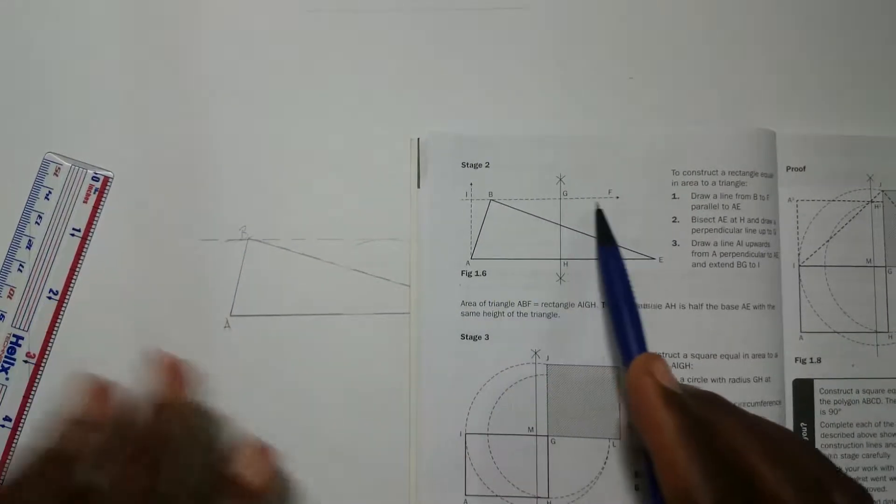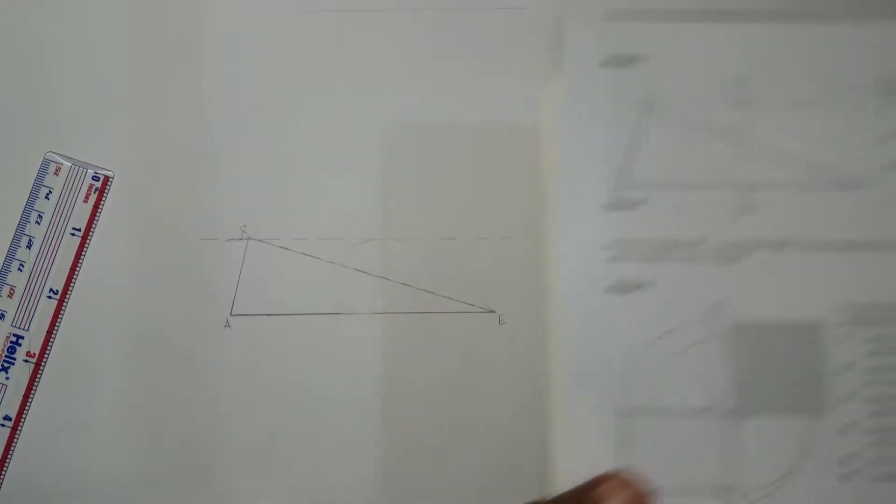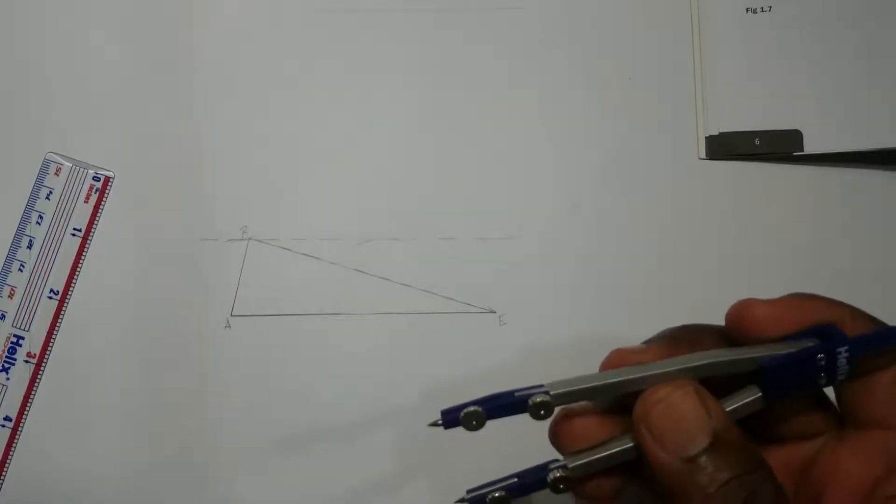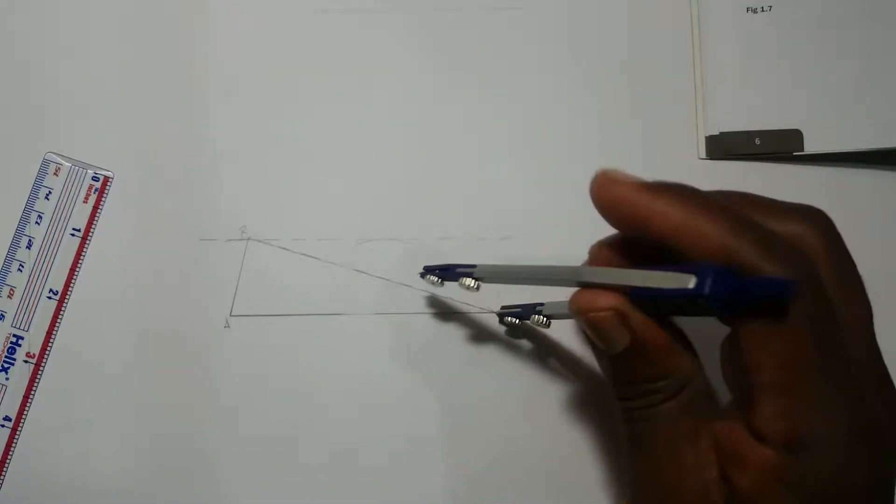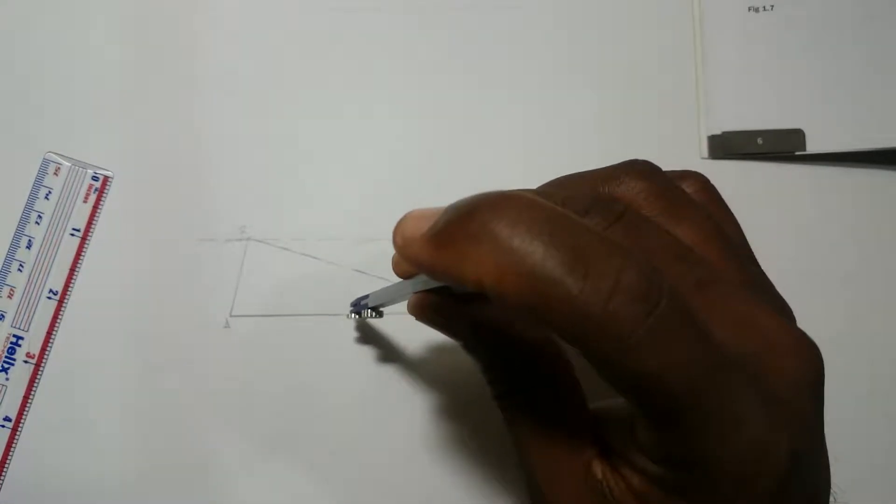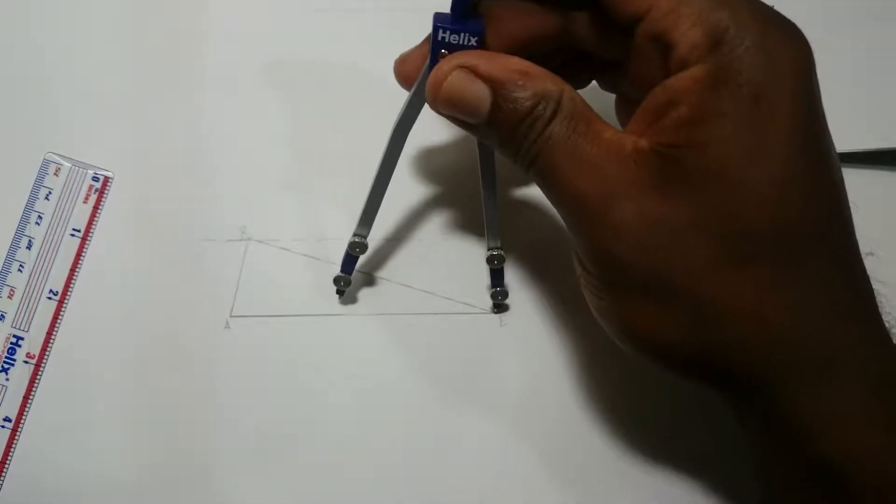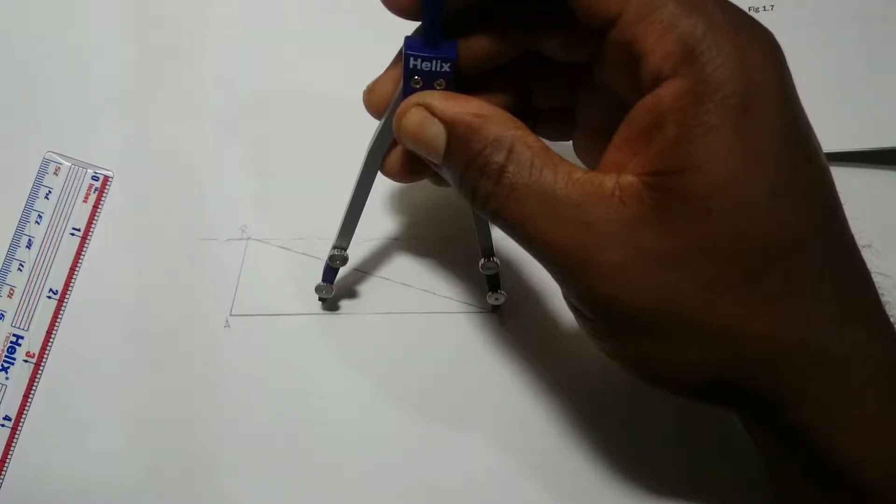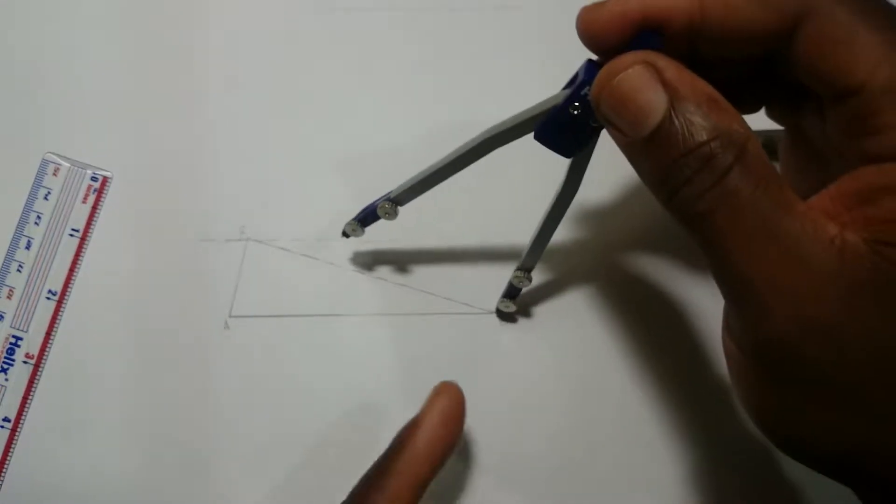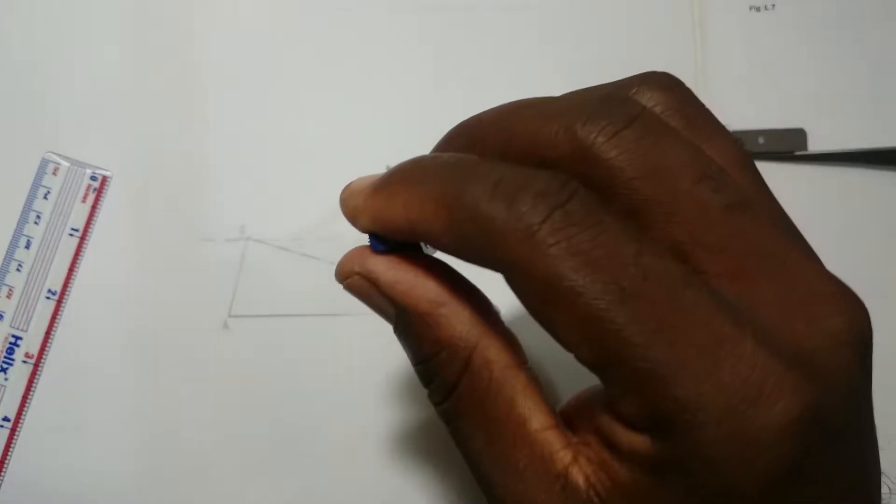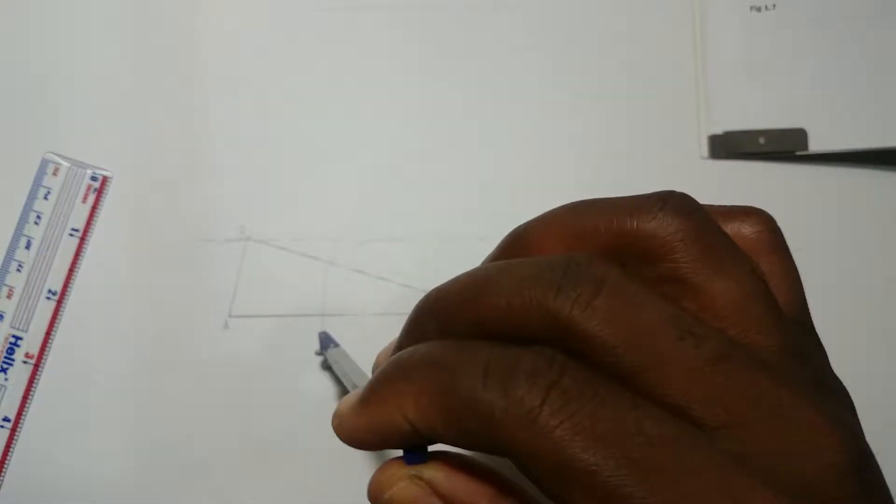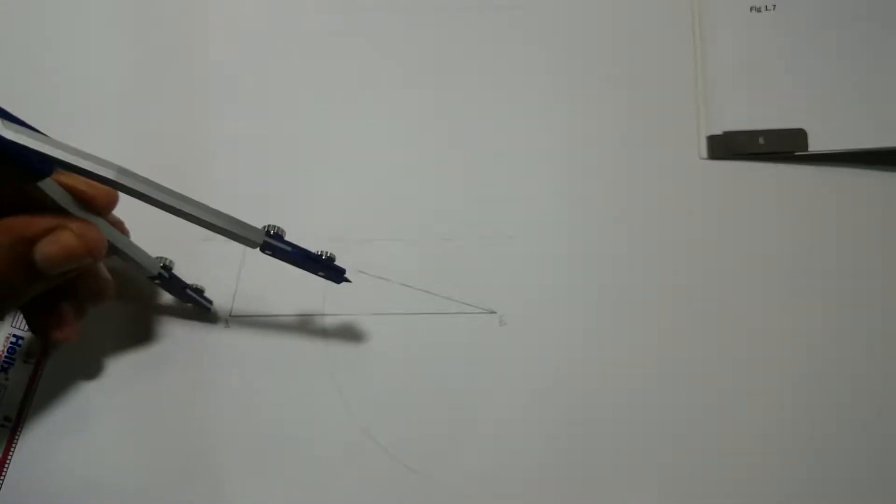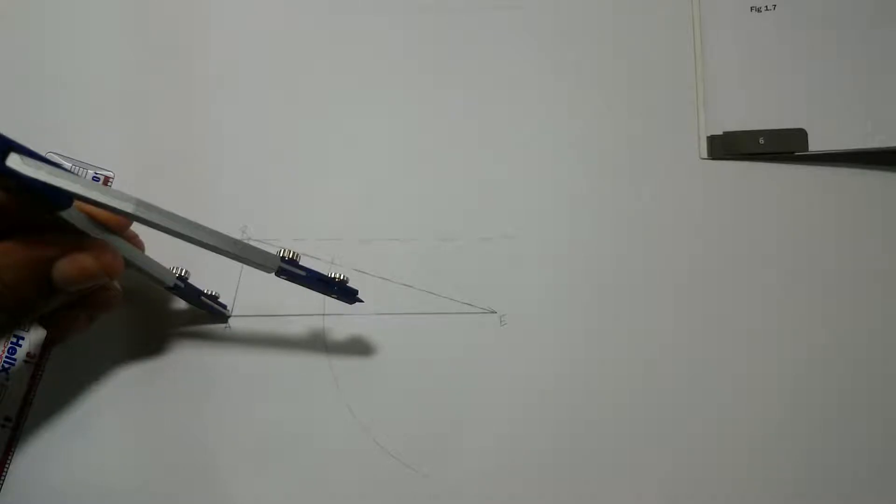If you know how to bisect, you open your compass to more than half of the baseline, whatever line it is - a little bit more than half. After you've set your compass, do not let it change its position. You make your line, and then you move your compass to the other end of the line, both ends, and then you strike another arc over here.